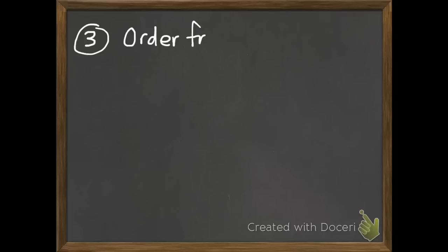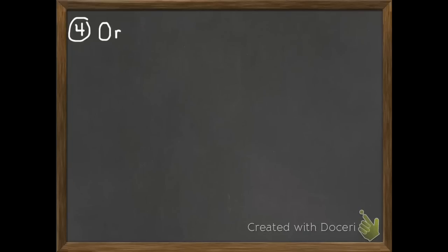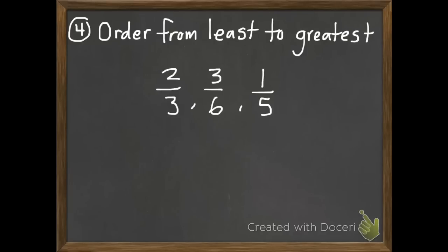For number three, we're going to order these three fractions from least to greatest. So, you have one-half, one-fourth, and five-eighths. You're going to need to make three number lines for this one. Same thing for number four. Order from least to greatest. Two-thirds, three-sixths, and one-fifth. Bring these into class tomorrow, and have a wonderful day. Yay!